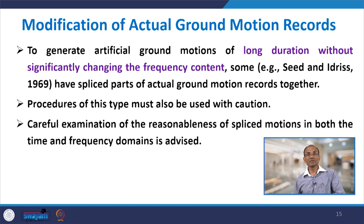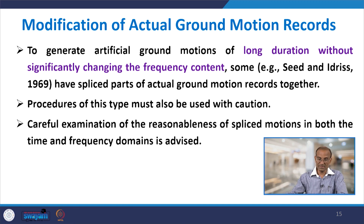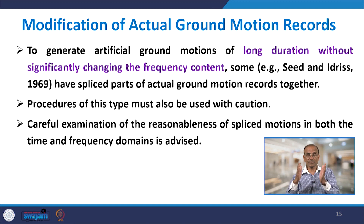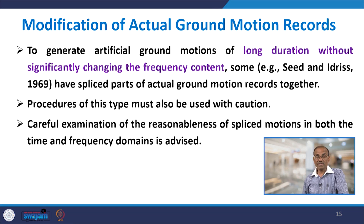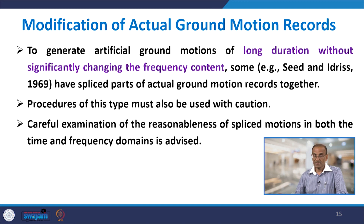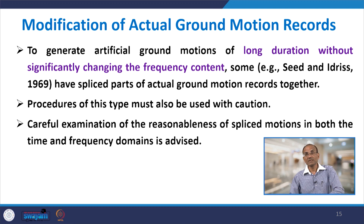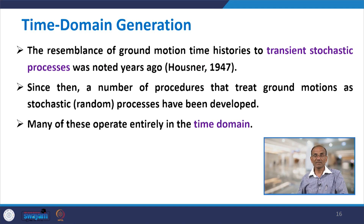To generate artificial ground motions of long duration without significantly changing the frequency content, Seed and Idriss in 1969 used splicing — joining parts of actual ground motion records together. The record is divided into different sectors and groups of splices are created. However, this process must be done cautiously, and careful examination of the resemblance of the spliced motion in both the time and frequency domain is advised.